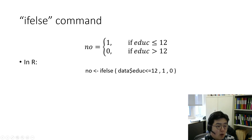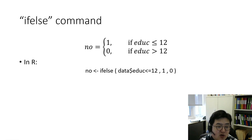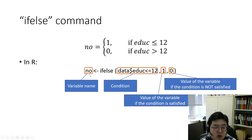This is how you do it. We are going to use the ifelse command, which is one of the basic commands in R. We are going to give the condition. In R, you have to translate the equation this way. We define the 'no' variable using the ifelse command. The ifelse command requires three arguments. So 'no' is the variable name — if you want a different name, you may change it.